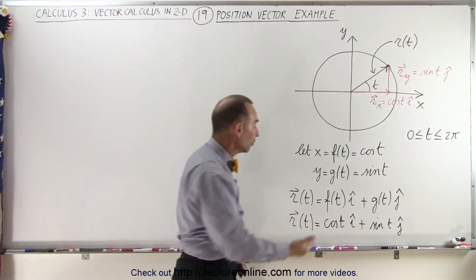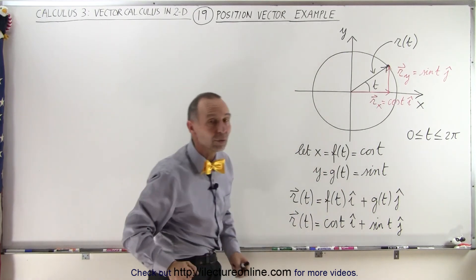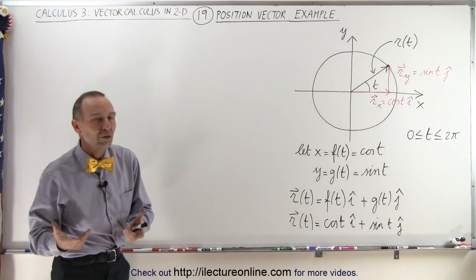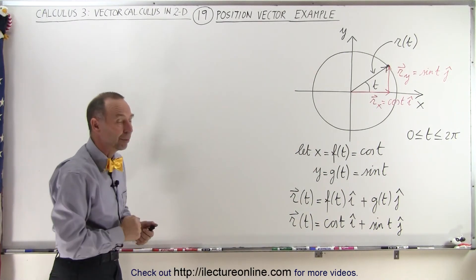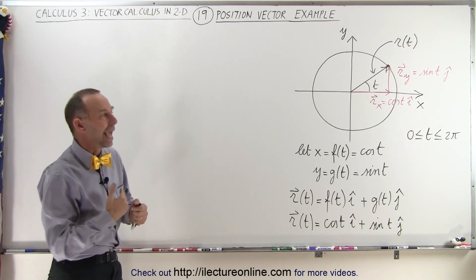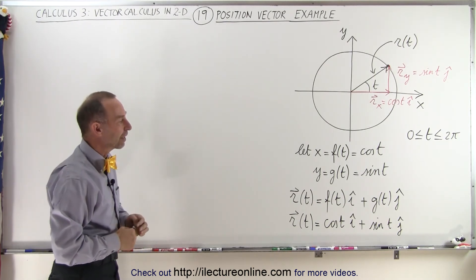So the position vector is simply the sum of its two components, and the components are expressed in terms of the parametric variable, in this case t being the angle between the x-axis and the position vector.